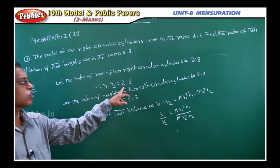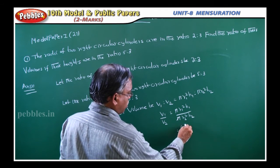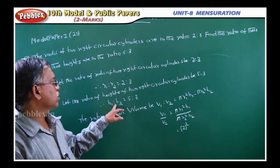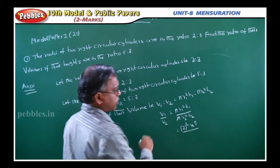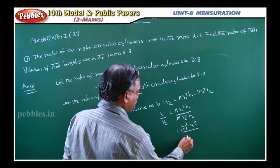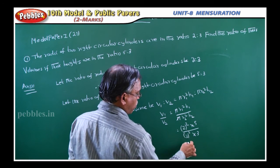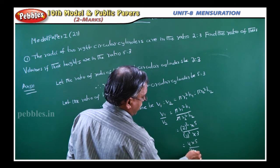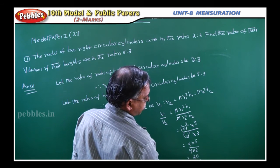Now, r1 square, r1 is what? r1 square means 2 the whole square. What is h1? h1 is 5. Just you have to substitute the values. By r2 square, what is r2? 3. So 3 the whole square into 3. 2 square is 4, 4 into 5 by 3 square is 9, 9 into 3. So that is 20 by 27.